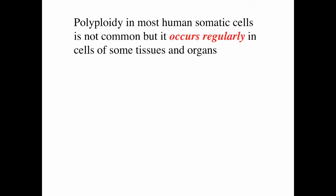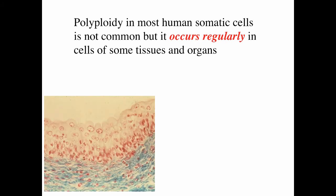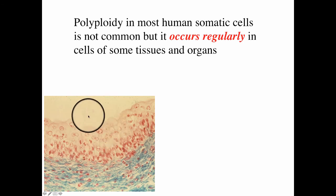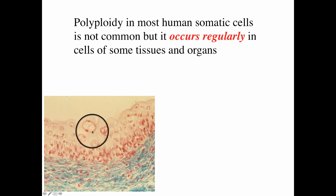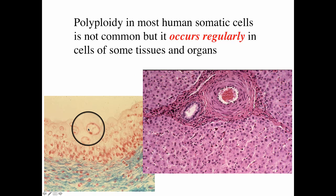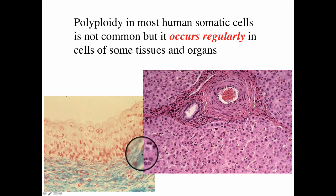Polyploidy in most human somatic cells is not common, but it does occur regularly in cells of some tissues and organs. In the epithelial cells that line the urinary tract, you can have polyploid cells — even cells with two nuclei. Polyploidy is also common in human liver cells.